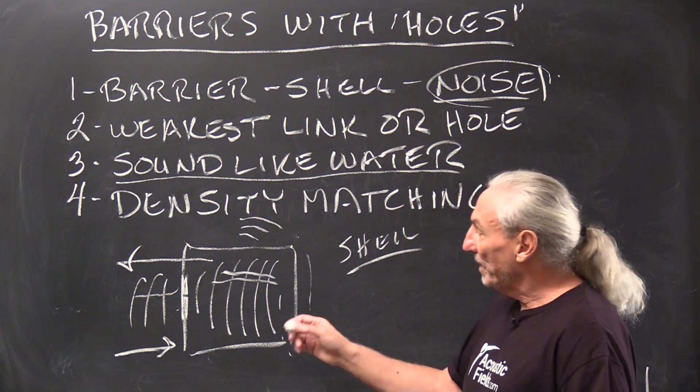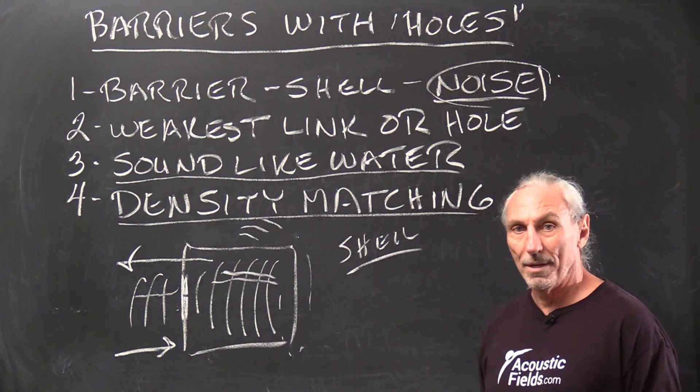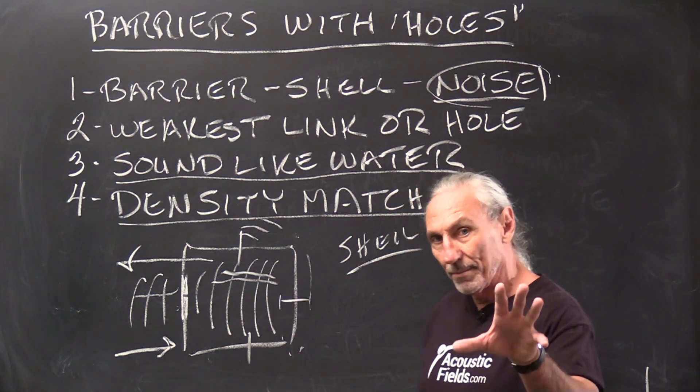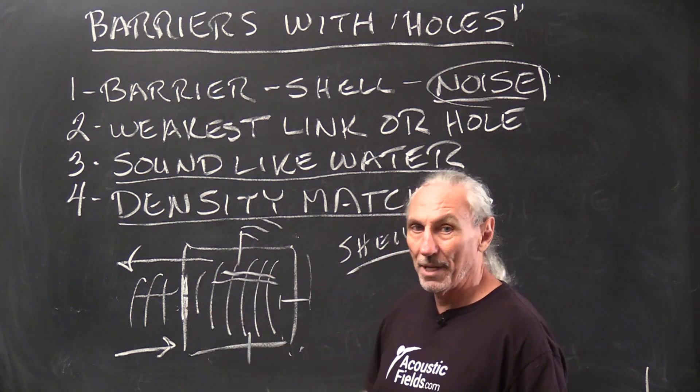So how do we treat the window? We come up with a term called density matching. So we have to take the density of our existing structure. Now these are minimums. Take the density of our existing structure and make the window the same.